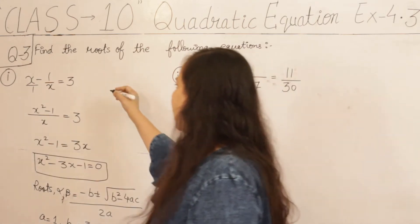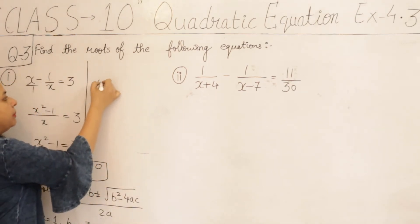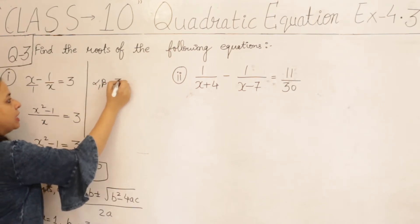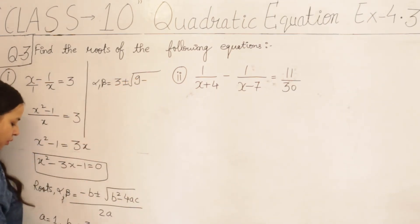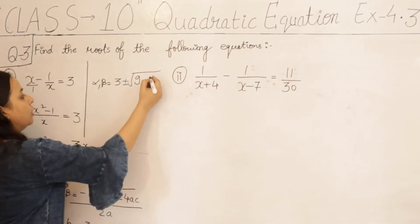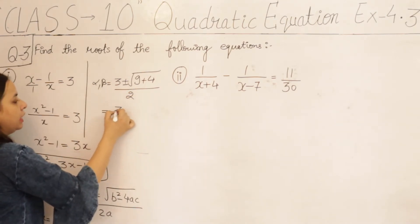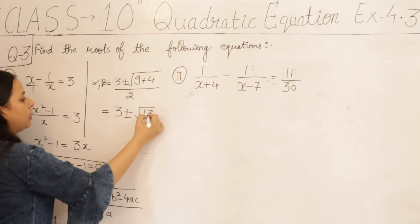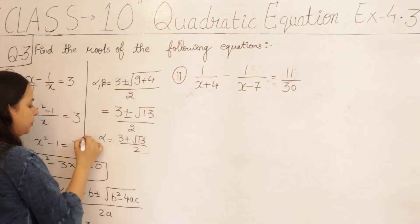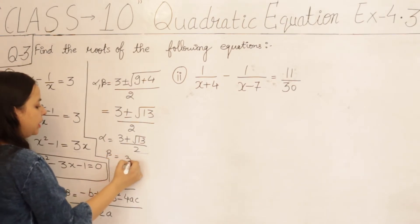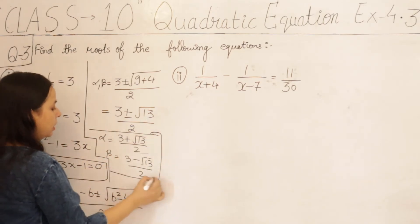So we will solve it here. Placing the values: alpha and beta equal to minus b, which is minus of minus 3, so plus 3, plus or minus under root of b squared which is 9, minus 4ac — a is 1 and c is minus 1 so that gives plus 4 — upon 2a, where a is 1 so 2. This gives us 3 plus or minus under root 13, upon 2. So alpha equals 3 plus root 13 upon 2, and beta equals 3 minus root 13 upon 2.